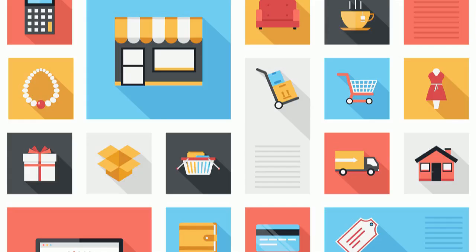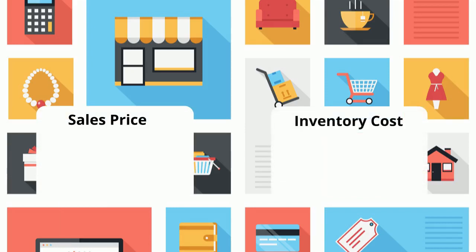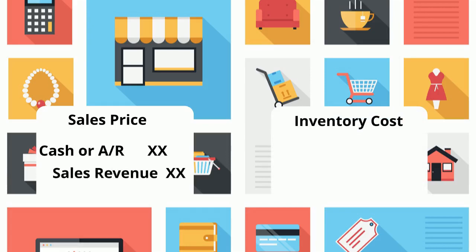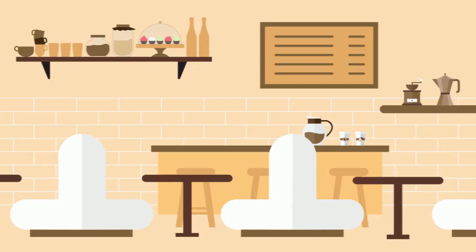Whenever we sell inventory, there are always two journal entries that must be made. One deals with the price we sold the inventory to our customers for; the other deals with the cost we purchased the inventory for. The sales price entry involves either cash or accounts receivable, depending on whether the customer has paid yet, and the related revenue account. The inventory cost entry involves a new account called cost of goods sold — a specialized expense account that keeps up with the cost of each sale of our inventory.